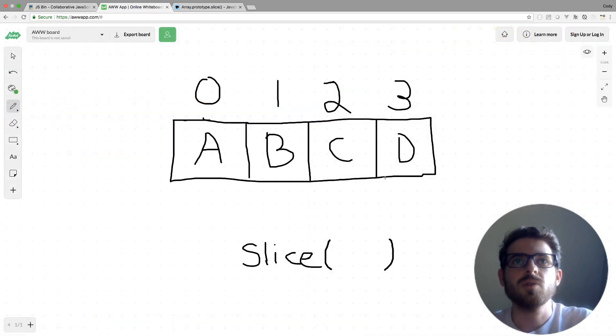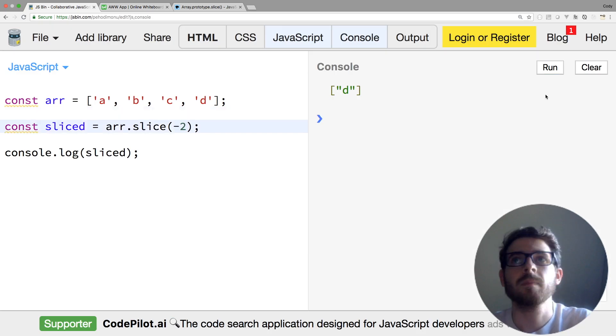Another cool thing that you can do with the slice method is you can actually give negative numbers for the argument. So if I were to do a negative two, that's actually going to move back two spots from the end of the array. So if I start here and go negative one, negative two, notice that that is going to give us all the elements that come after that location. So if we do negative two, it should give us CD. And it does.